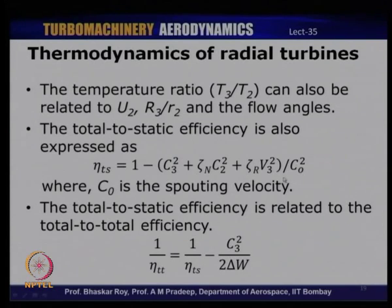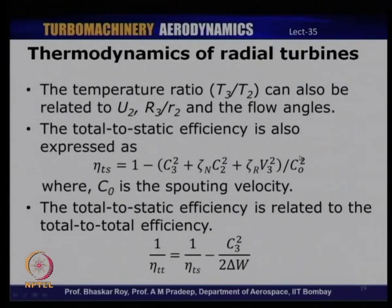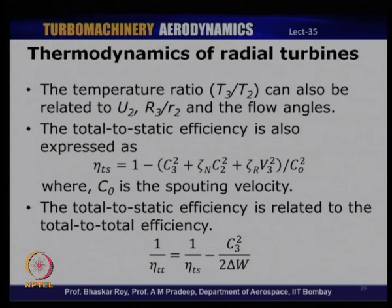The relation between total-to-static and total-to-total efficiency — already seen for axial turbines — also holds for radial flow turbines: 1/η_TT = 1/η_TS − C3²/(2·ΔW), where ΔW is the work done by the rotor. This relates the two efficiency definitions used as performance parameters.